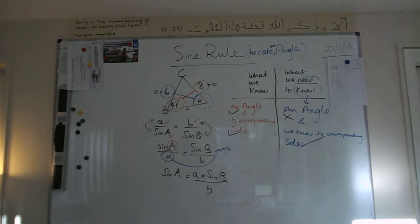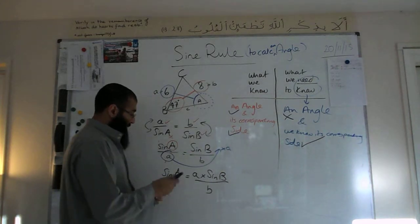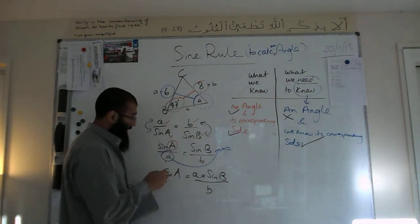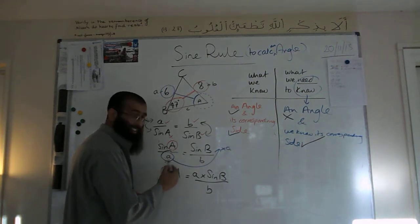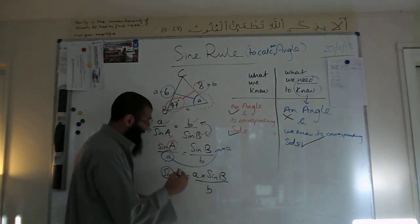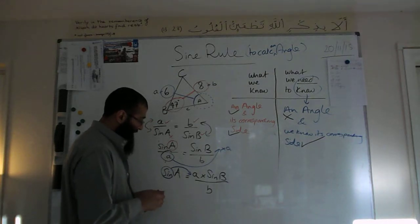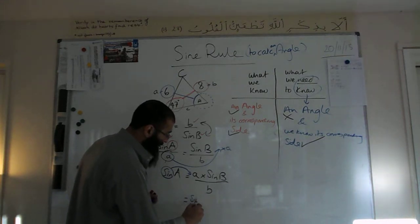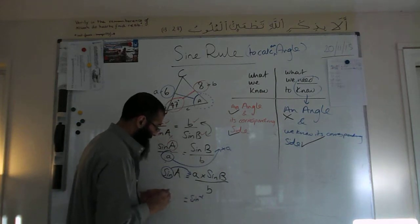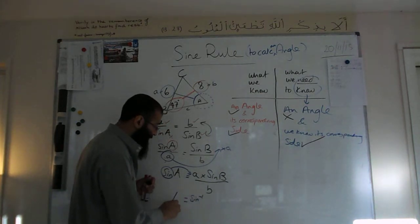One more thing we've got to do: we have to now move the sine over, because we don't want sine of A — we want just A on its own. The opposite of sine is inverse sine, written as sine to the minus one. So A equals sine to the minus one of a times sine B over b.